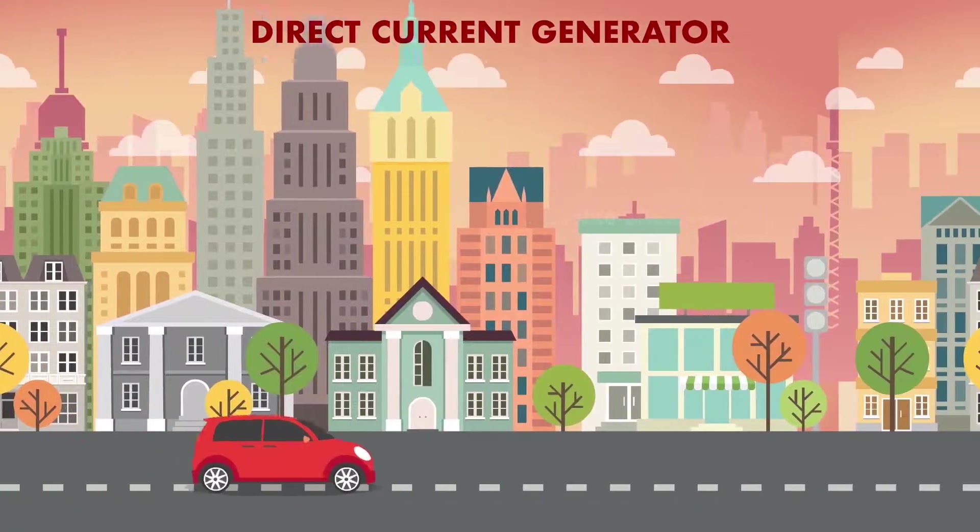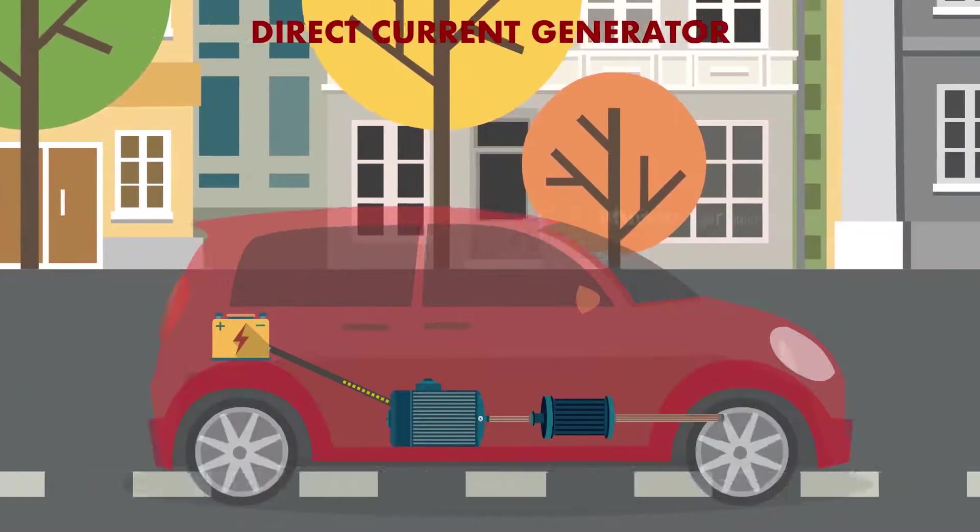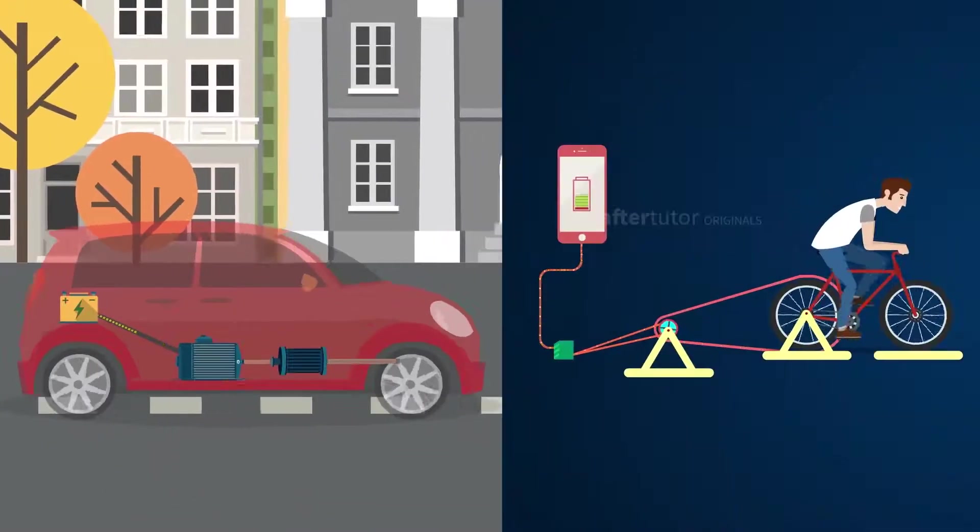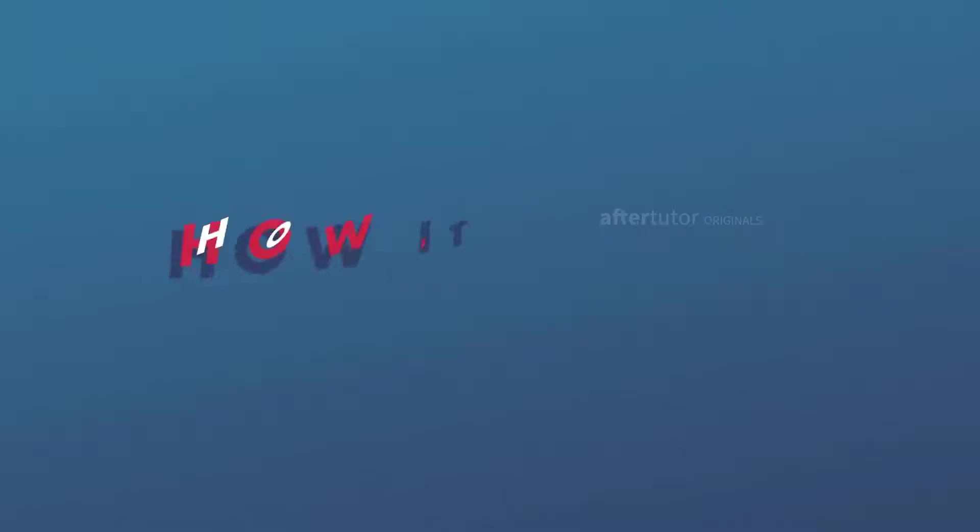Now coming to a DC generator, it is widely used for small scale purposes like charging the battery in automobiles or in places which require a small power supply. But how does it work?